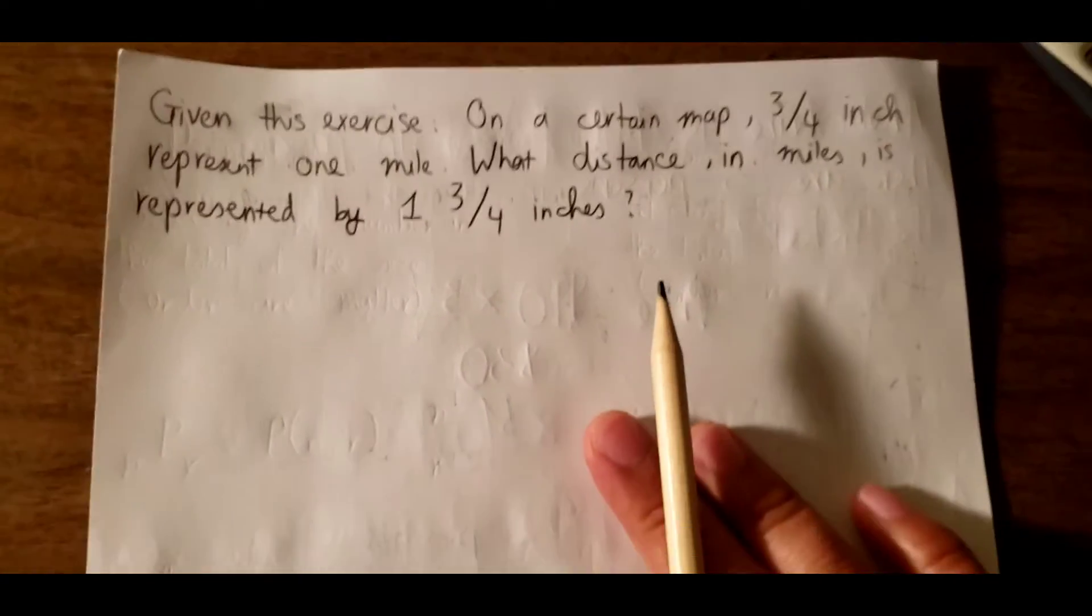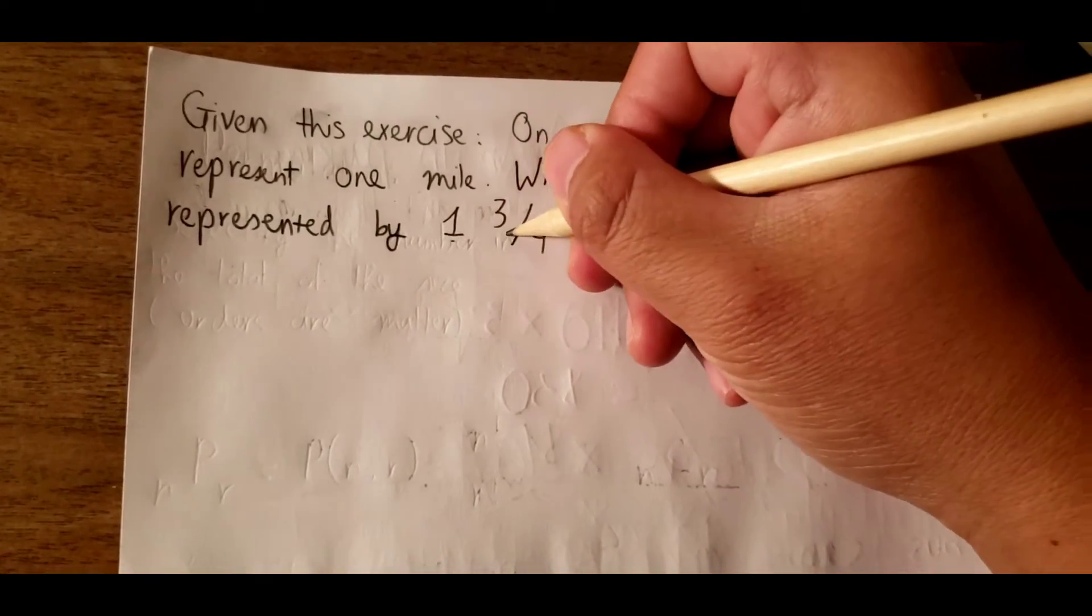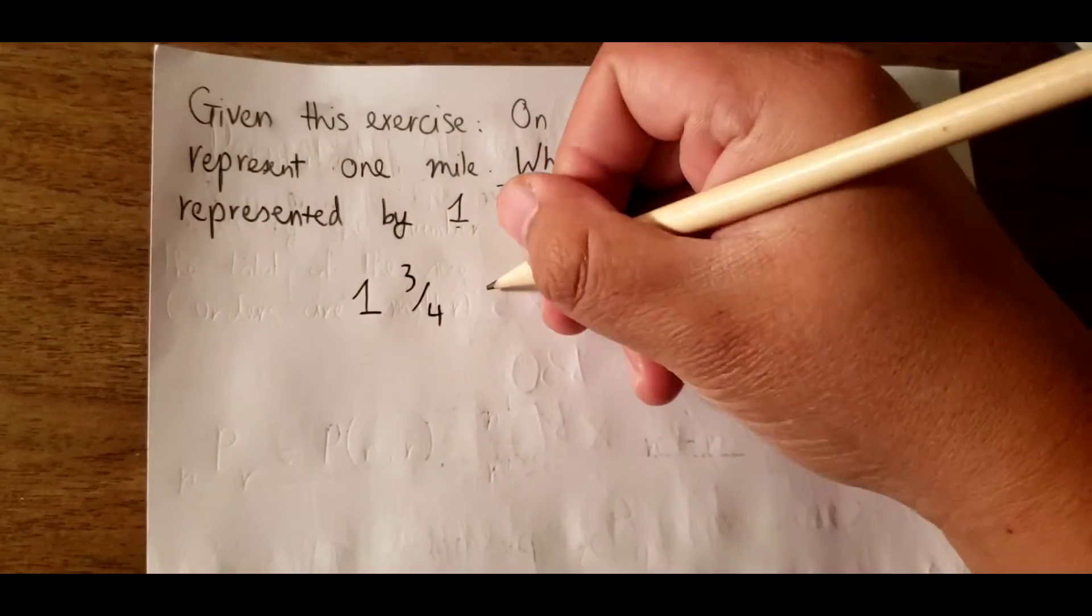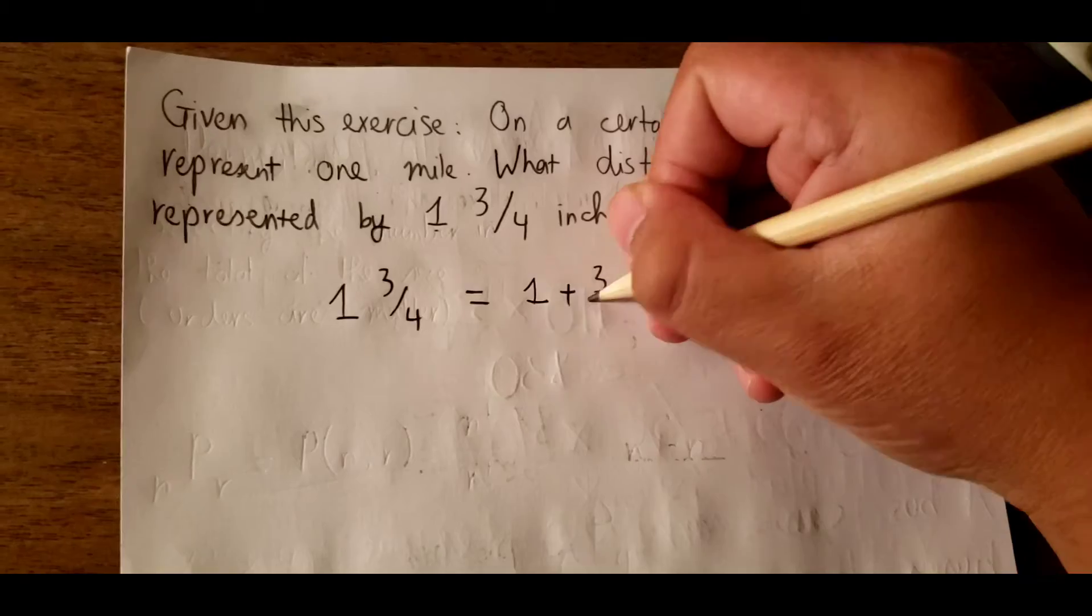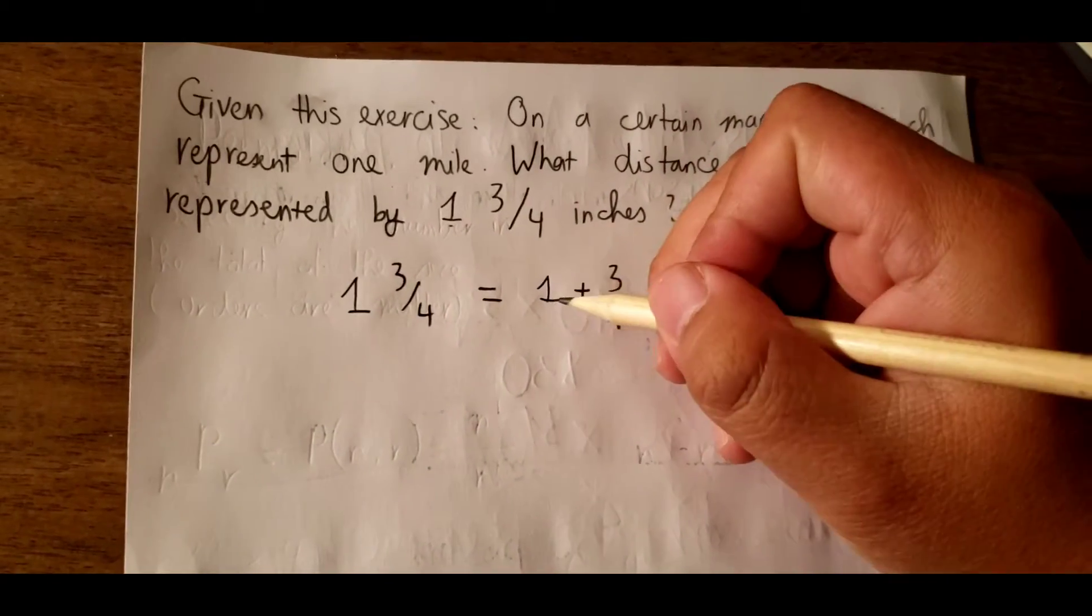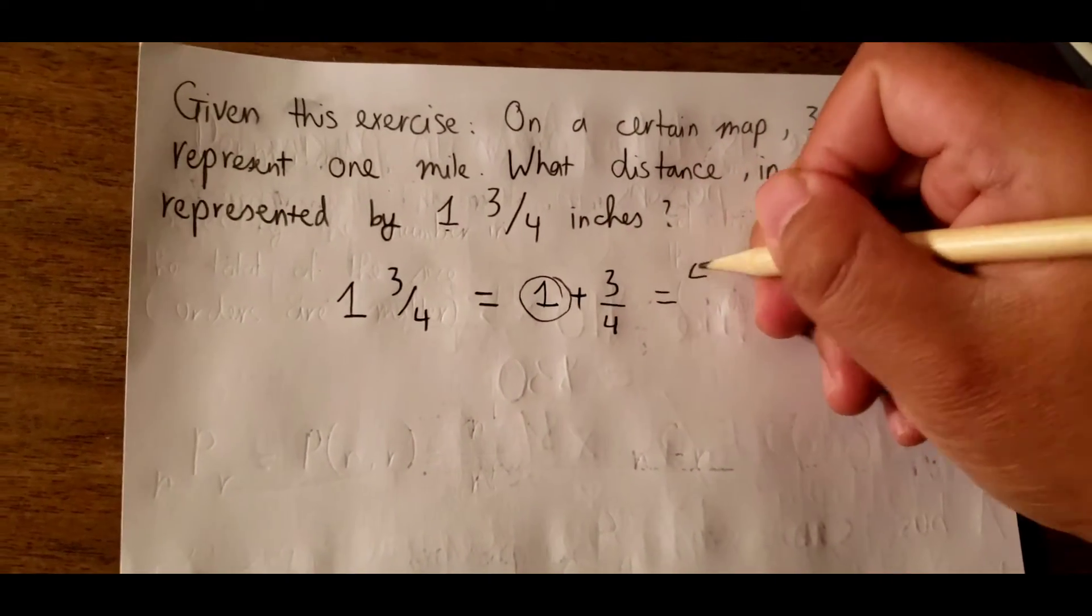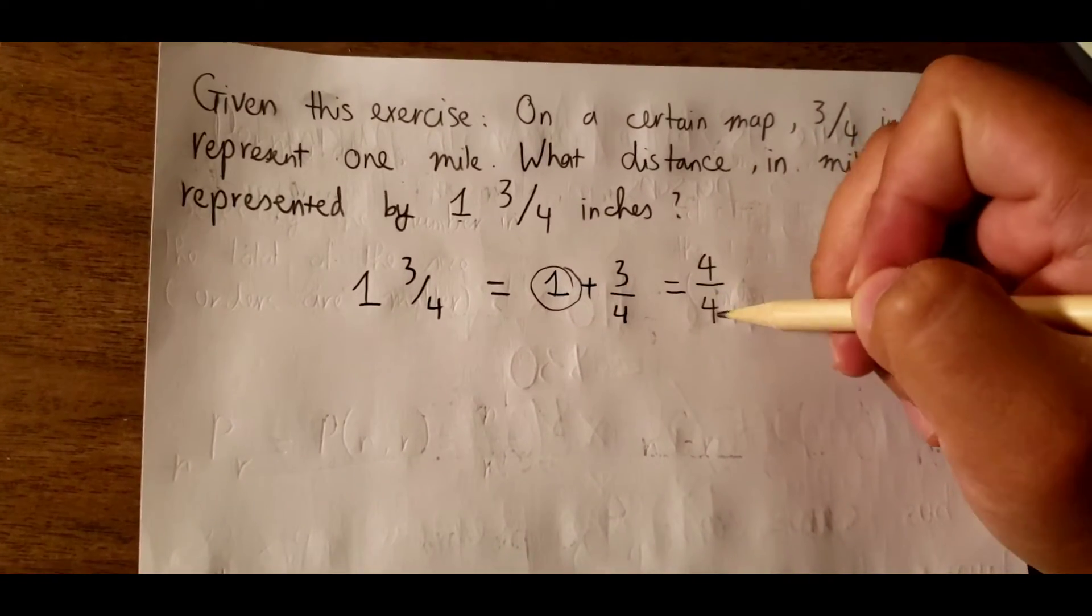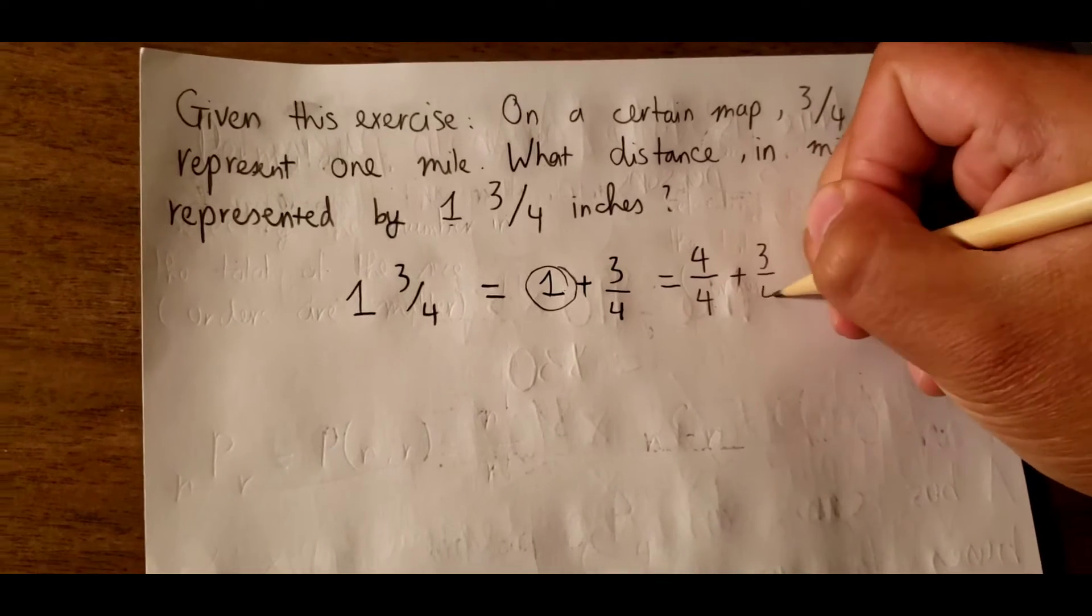First, we must know that 1 and 3 over 4, just like this, equals 1 plus 3 over 4. And this number 1 in here, we can put like this: 4 divided by 4, because 4 divided by 4 is 1, and we have 3 over 4.